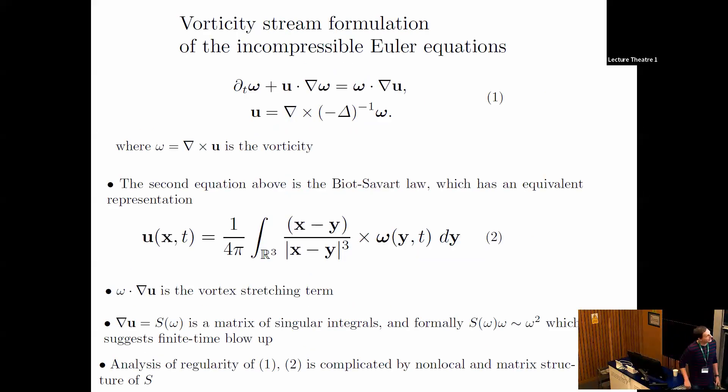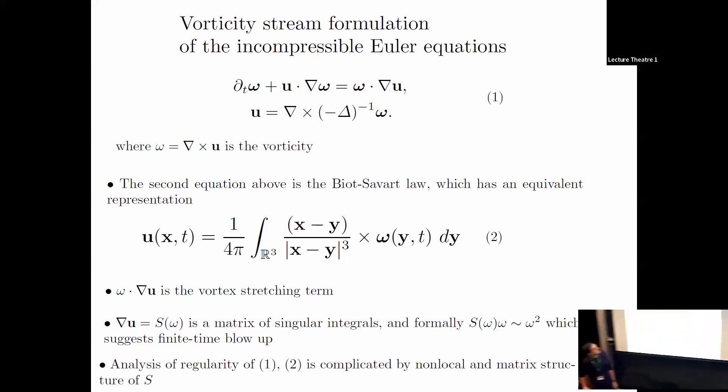The starting point is the vorticity stream formulation of Euler, completely equivalent to the native formulation. We write the momentum equation in terms of vorticity, then determine velocity from vorticity via the Biot-Savart law. A very important term is the vortex stretching term, the last term up there, because that's required for nonlinear amplification of vorticity. In 2D, that term is absent—you just have advection of vorticity along particle paths, and you can prove there are no singularities. Vortex stretching is required for singularities.